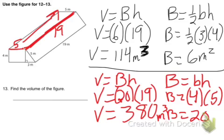So you simply add those, 114 cubic meters to 380 cubic meters, and you get 494 cubic meters. And that's the answer, 494 cubic meters.